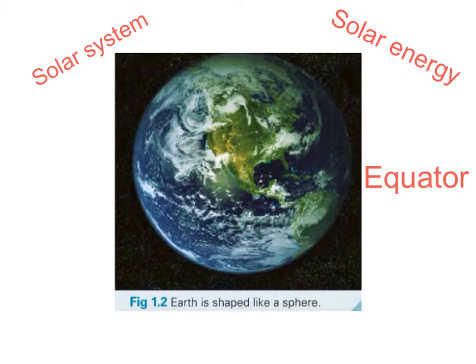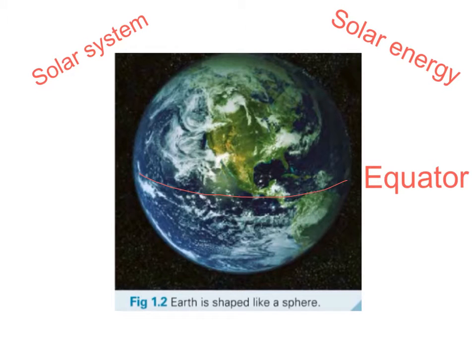The equator is an imaginary line that runs through the centre of the Earth, which technically splits it into two hemispheres. The Earth is able to support life because it has water and air and it is the ideal distance from the sun. If it were closer to the sun, it would be too hot. If it was further from the sun, it would be too cold.